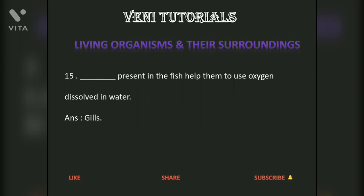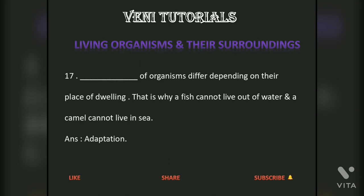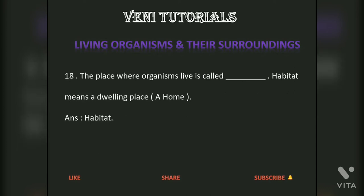Gills present in the fish help them to use oxygen dissolved in water. Answer: Gills. The presence of specific features or certain habits which enable an organism to live naturally in a place is called adaptation. That is why a fish cannot live out of water and a camel cannot live in the sea. The place where organisms live is called a habitat. Habitat means a dwelling place — a home. Answer: Habitat.